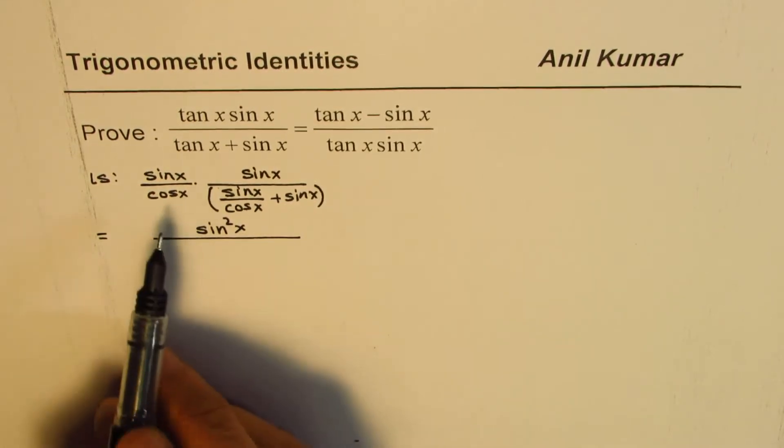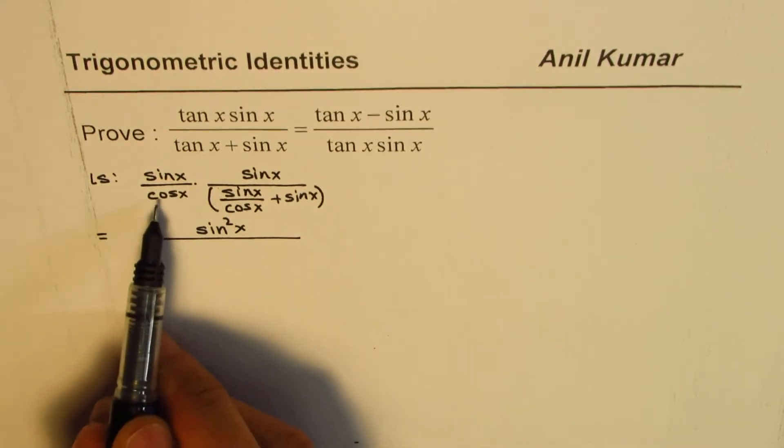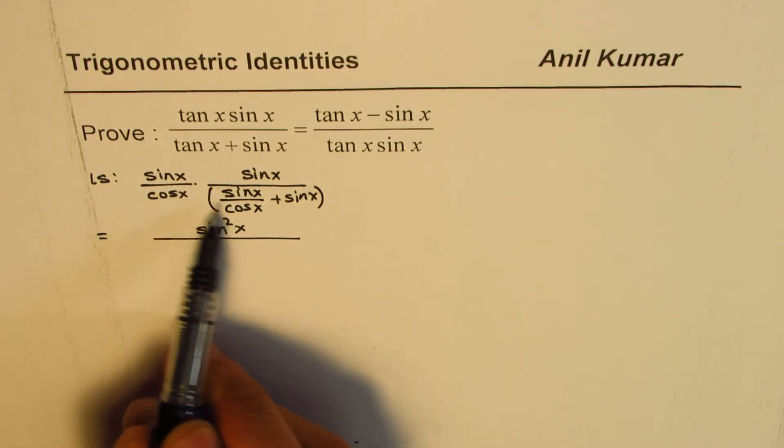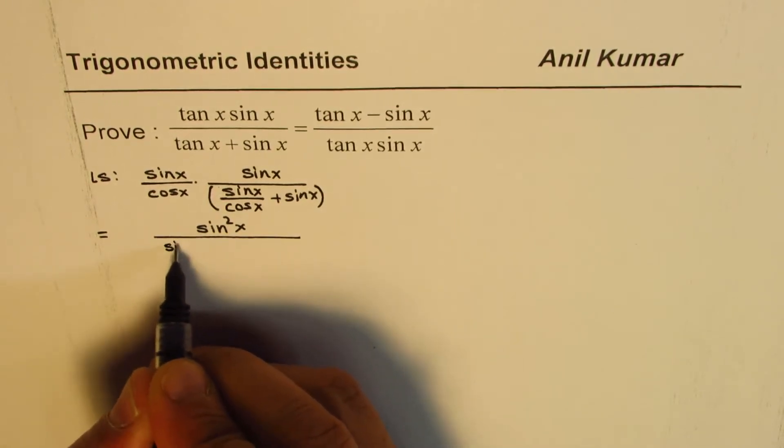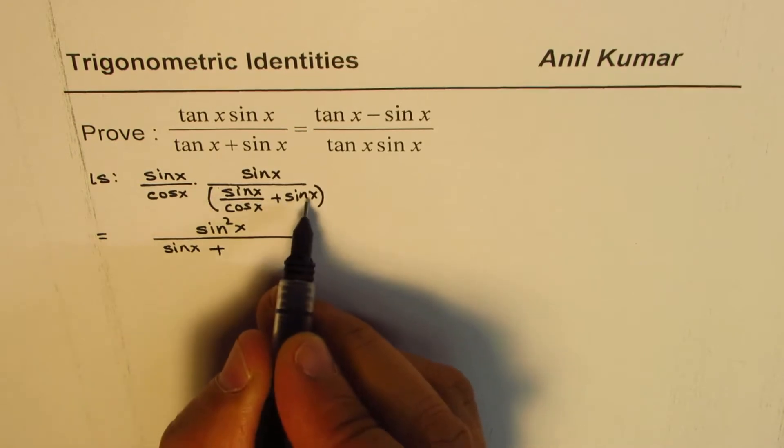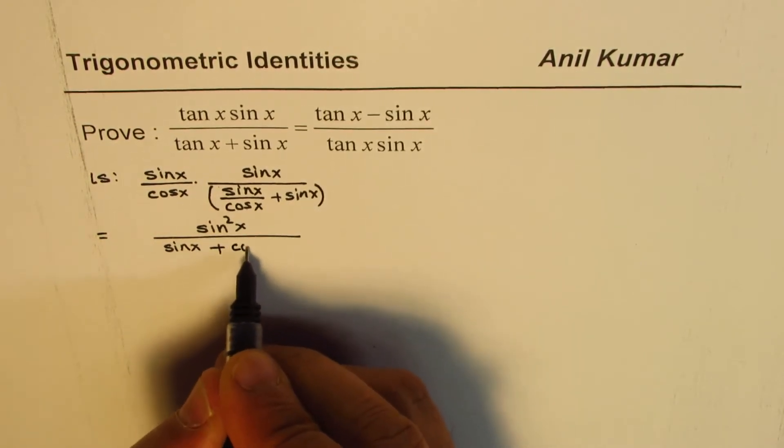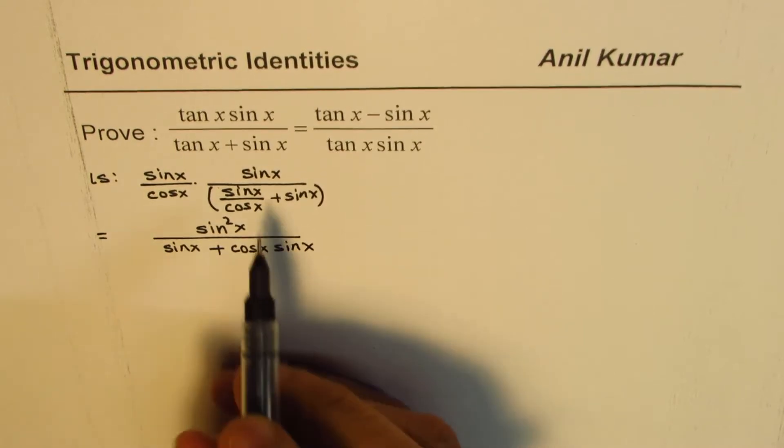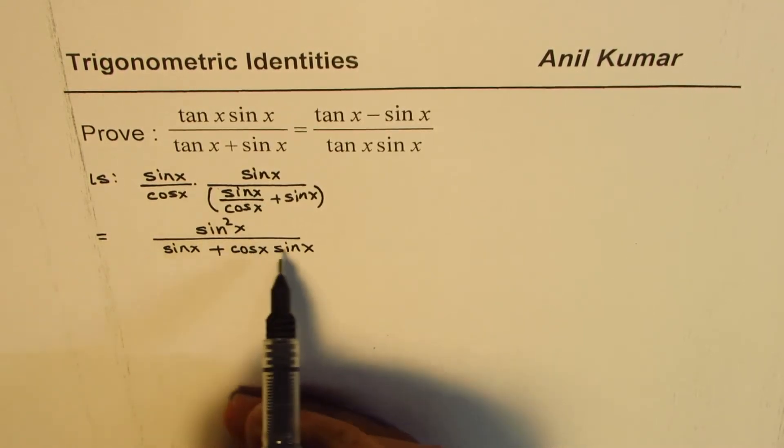This left side could be written as sine x times sine x is sine square x. In the denominator, if I expand cos x times sine x over cos x, cos x cancels, so we are left with sine x plus cos x times sine x gives us cos x sine x.